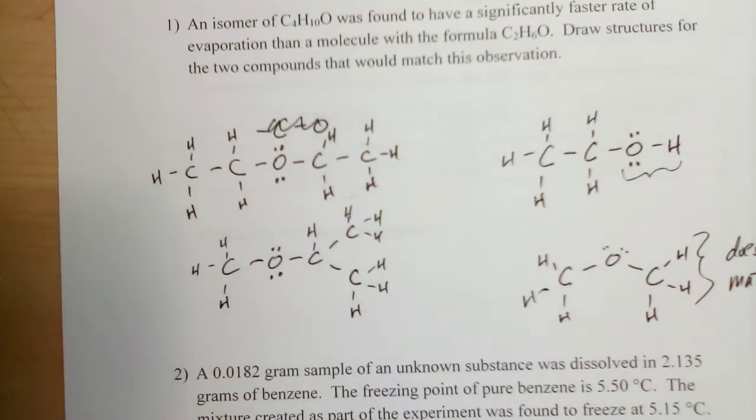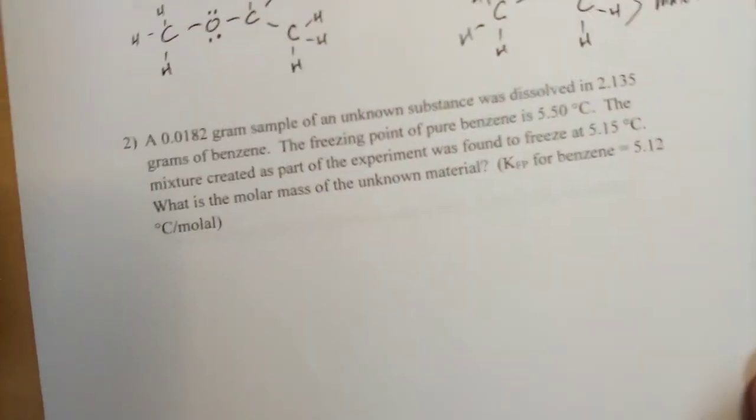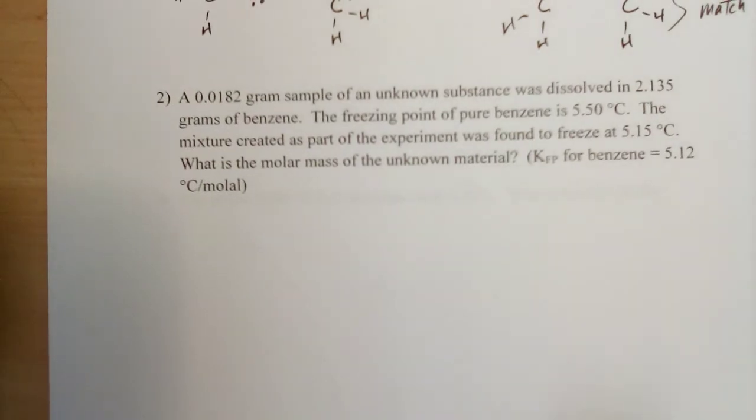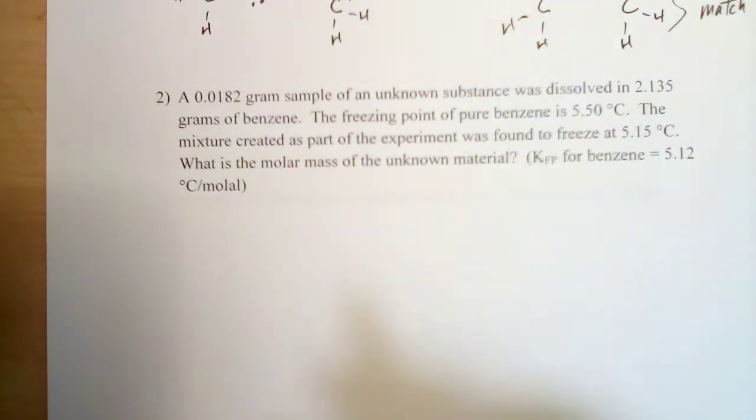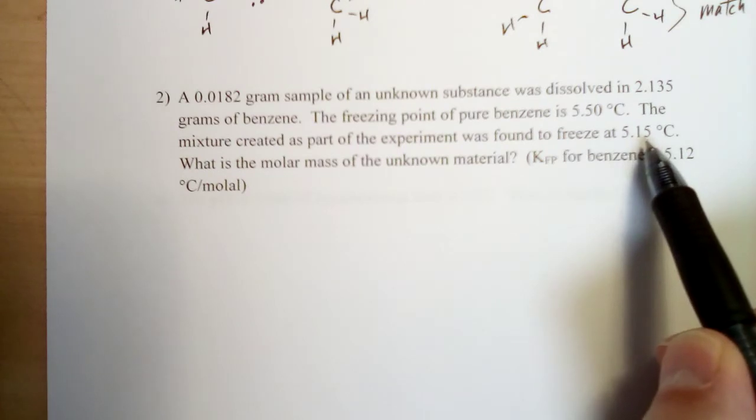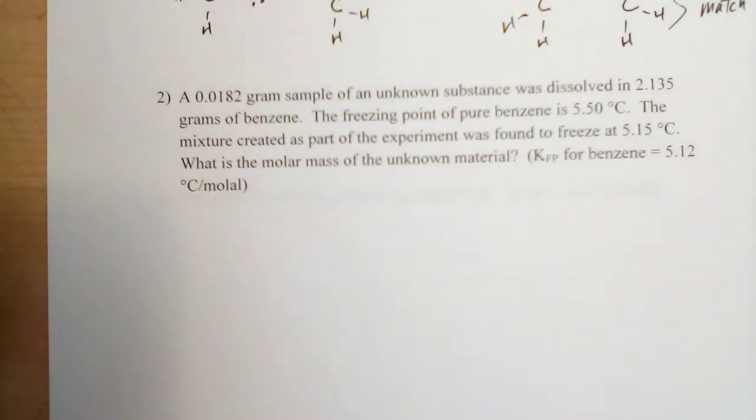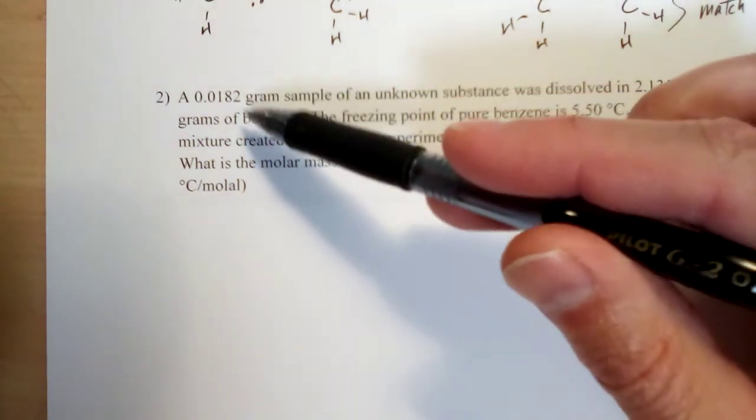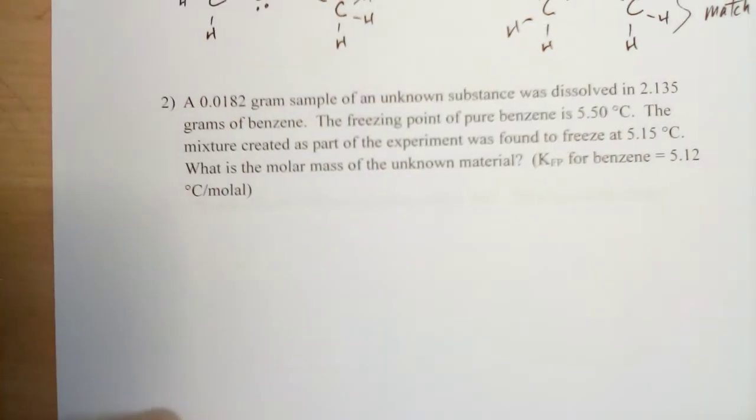Okay, let's see if we can fit the second problem in here. So problem number two, we've got a sample of an unknown compound, dissolved it in some benzene—so that's our solvent there. And then we're given the freezing point of pure benzene at 5.5°C, and we're told the mixture is found to freeze at a lower temperature. So this is freezing point depression, one of the colligative properties we talked about. How much the freezing point went down is going to relate to how many particles are dissolved in the solution.